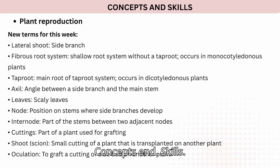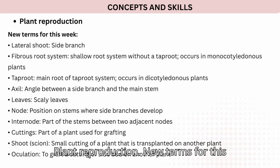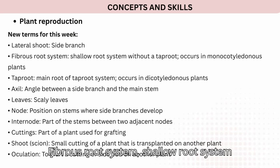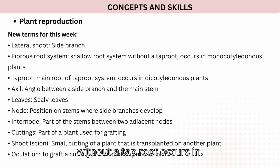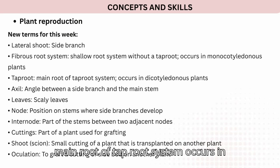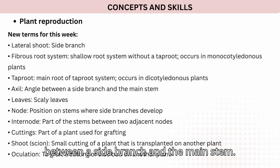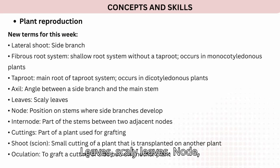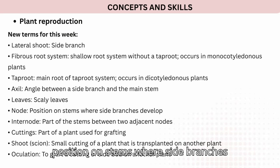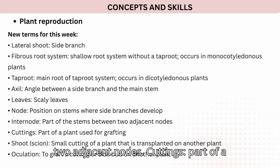Concepts and skills — plant reproduction. New terms for this week: lateral shoot (side branch); fibrous root system (shallow root system without a taproot, occurs in monocotyledonous plants); taproot (main root of taproot system, occurs in dicotyledonous plants); axil (angle between a side branch and the main stem); scaly leaves; node (position on stems where side branches develop); internode (part of the stem between two adjacent nodes).